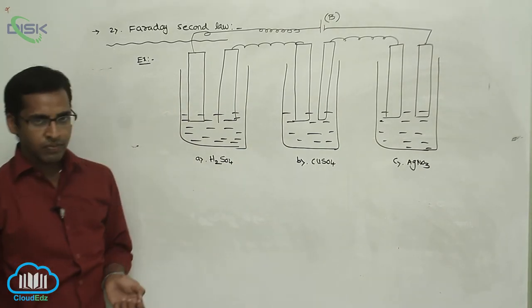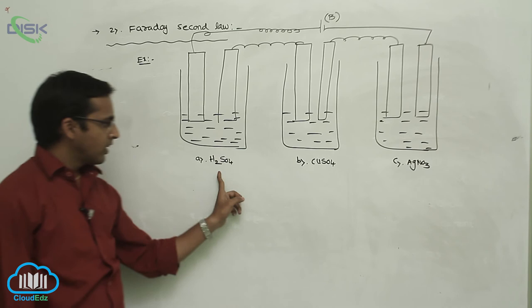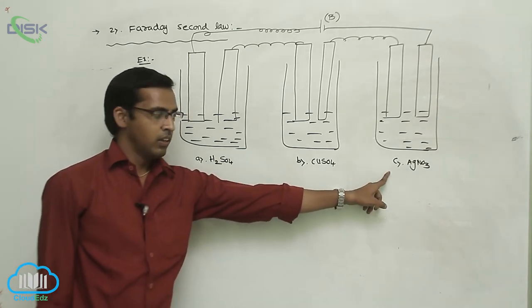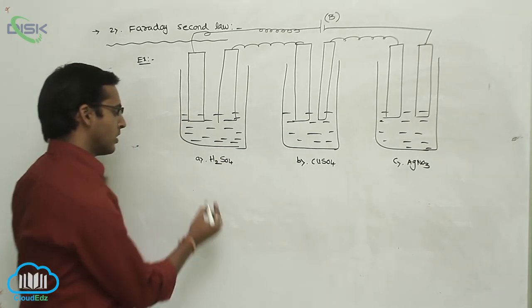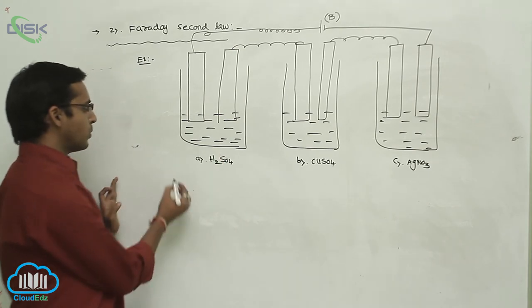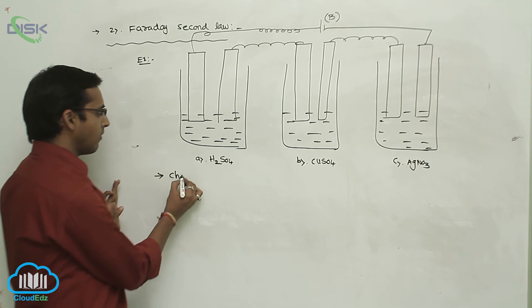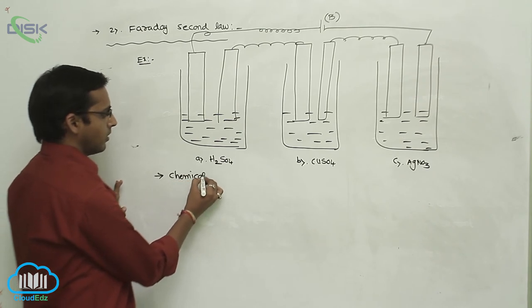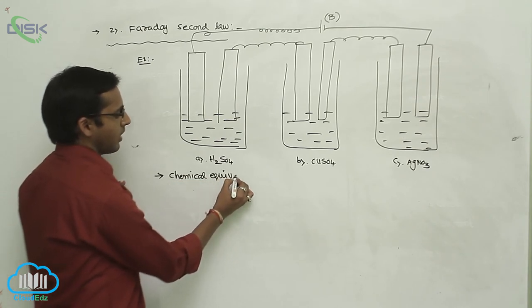So the flowing of current in three different solutions - the weight of substance is liberated is directly proportional to its electrochemical equivalent. This is called Faraday's second law.